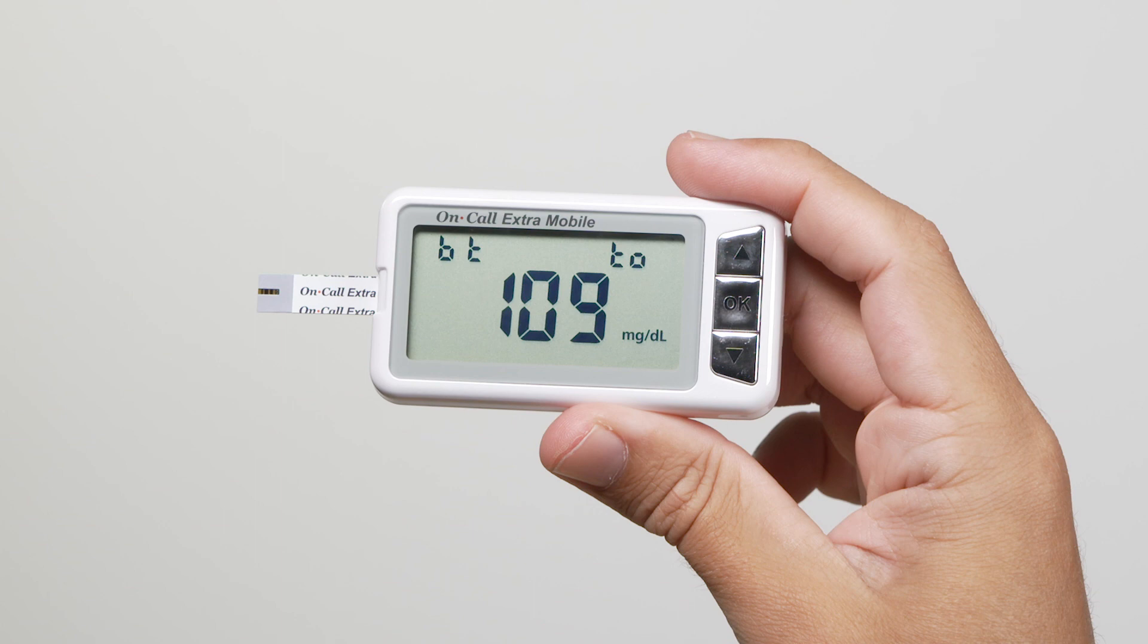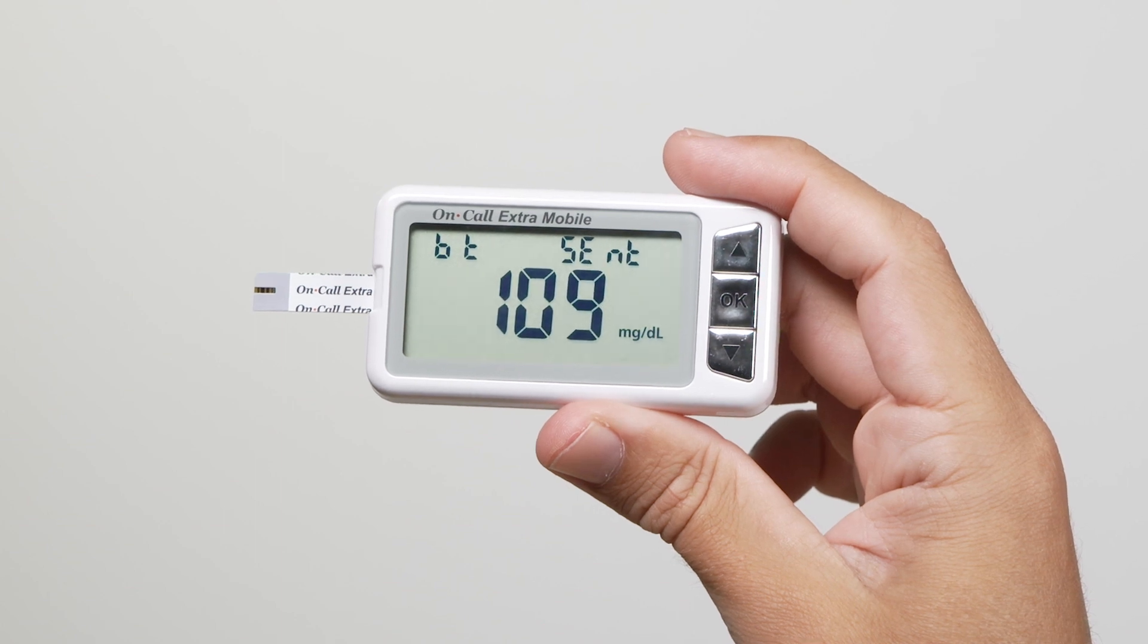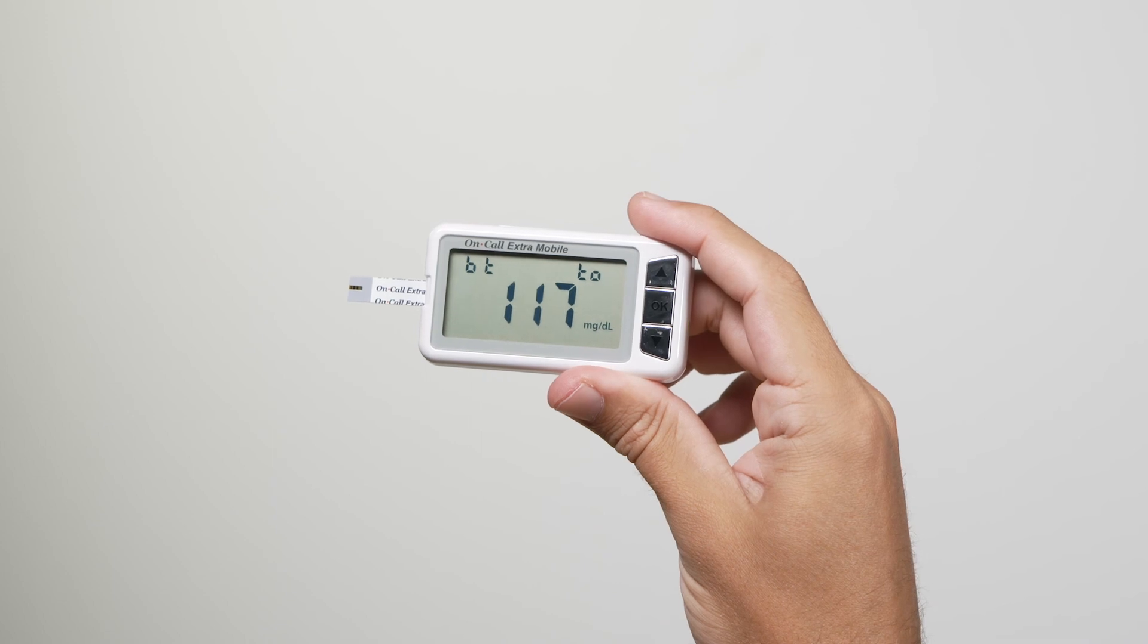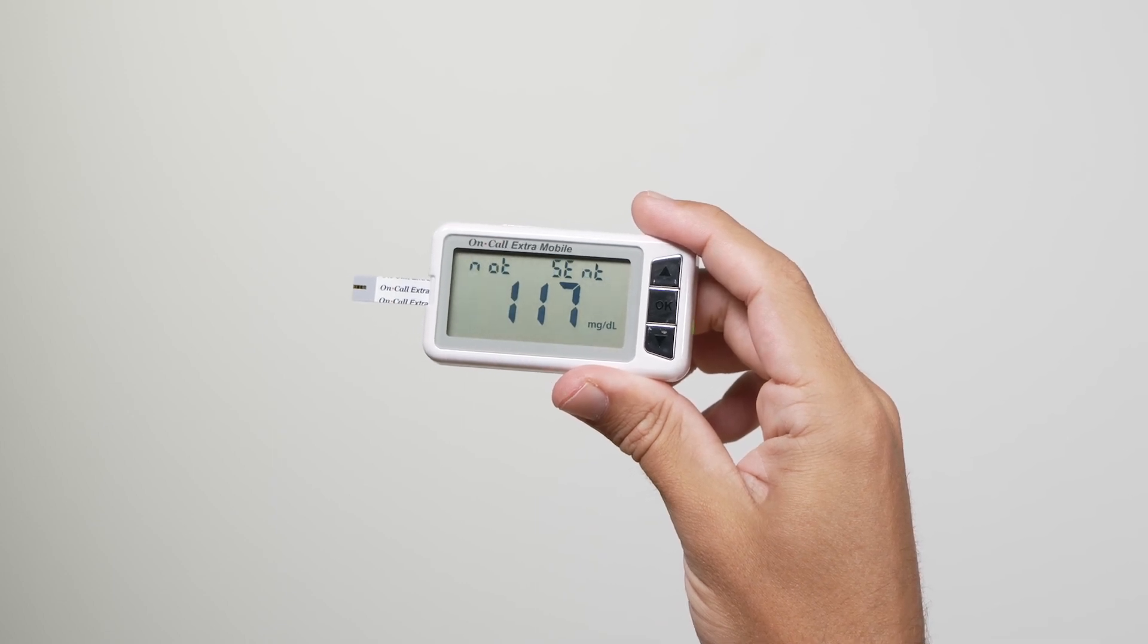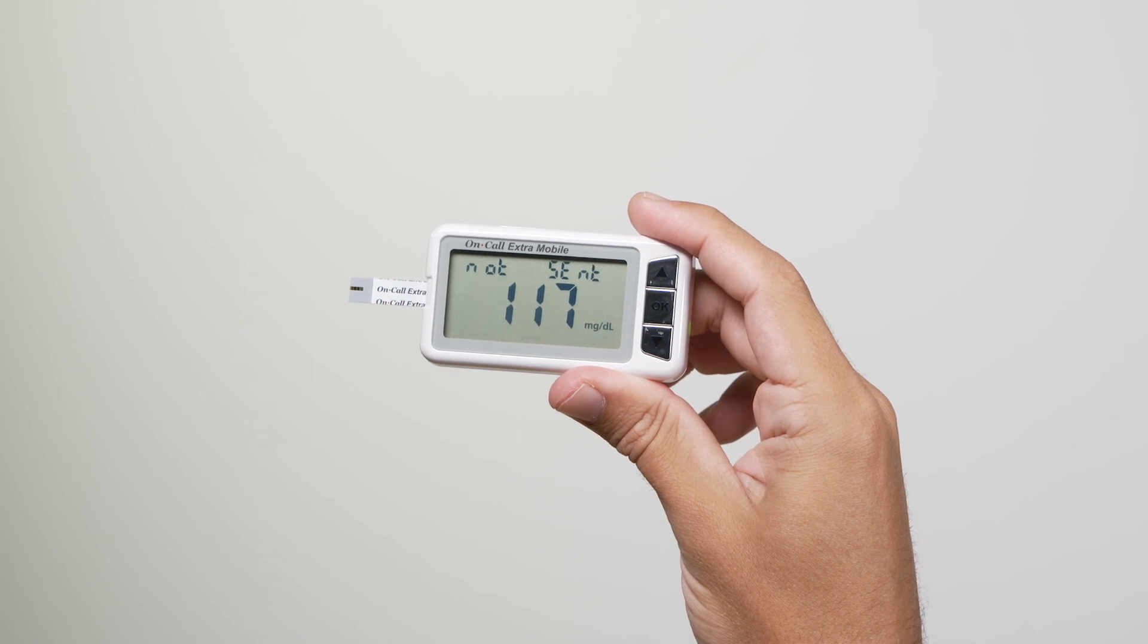Once the transmission has finished, the words BT and sent appear at the top of the display. If the transmission was interrupted and the data transfer failed, the words NOT and SENT appear at the top of the display.